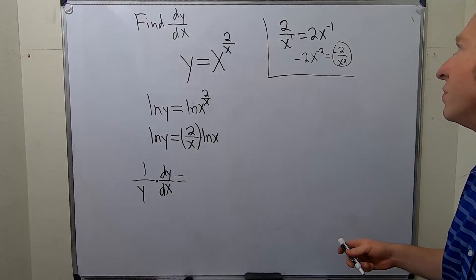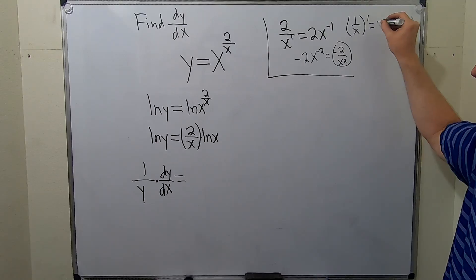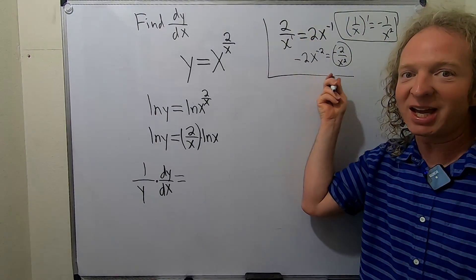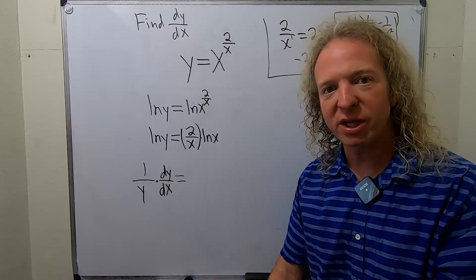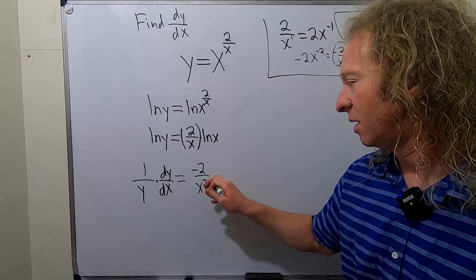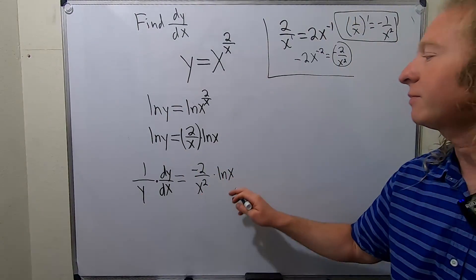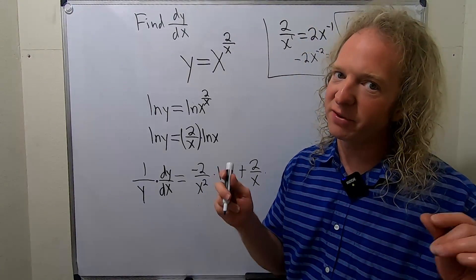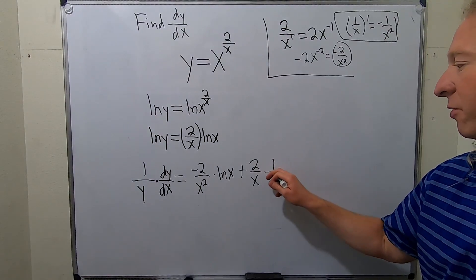Again, at some point you say, you know what, I'm going to memorize that the derivative of 1 over x is negative 1 over x squared, and I'm never going to forget it, so I never have to go to the side and do this again. It's worth memorizing. So again, the product rule is derivative of the first times the second - so this is our second piece - plus the first times the derivative of the second piece. So the derivative of the natural log of x is 1 over x.